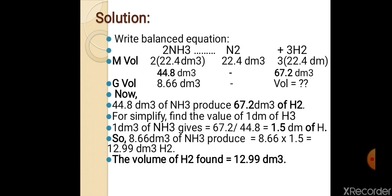یہ تھی last calculation of stoichiometry۔ سب سے پہلے mass-mass، پھر mass-volume، اور تیسری اور آخری calculation ہماری volume-volume تھی۔ آج ہم نے stoichiometric calculations مکمل کی ہیں۔ I hope you have understood very well. You have to practice these three types of stoichiometry calculations, and remember these are used at STP conditions. Thank you and Allah Hafiz.